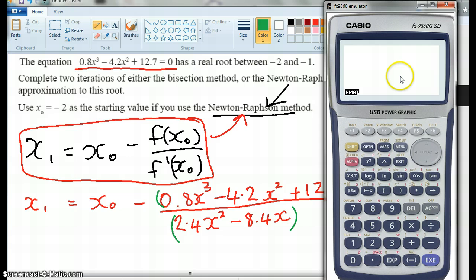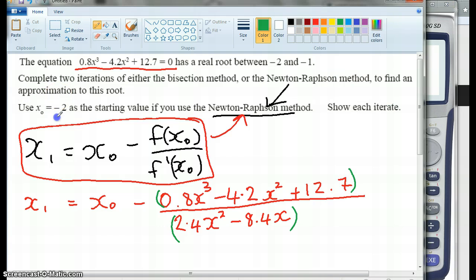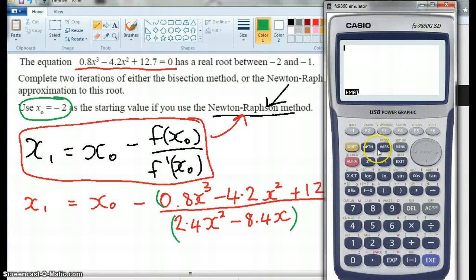So let's go. It says to start with x₀ equals negative 2. So what we do is we go negative 2, execute, and negative 2 is now our answer.